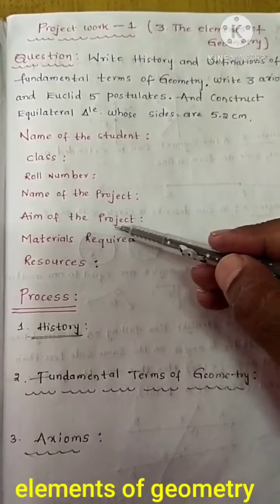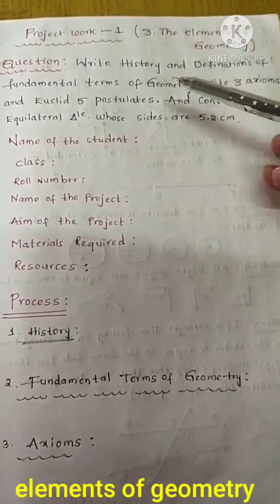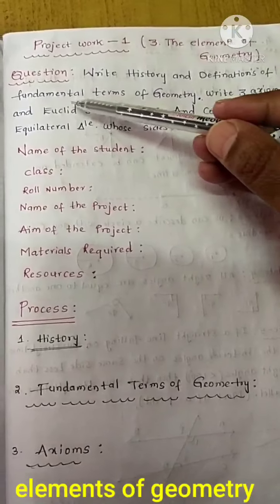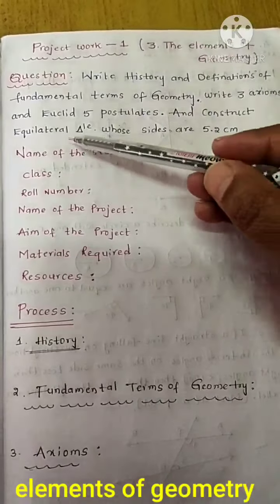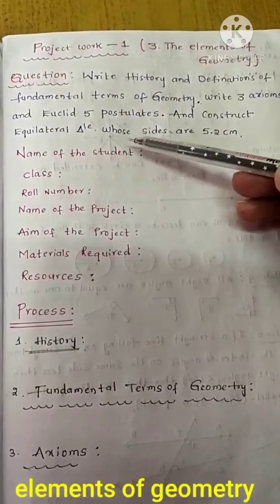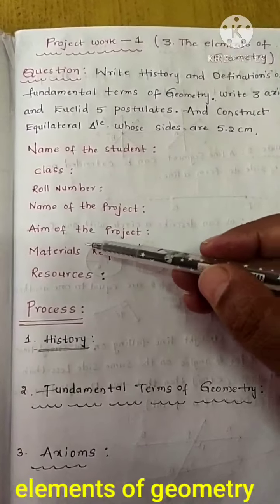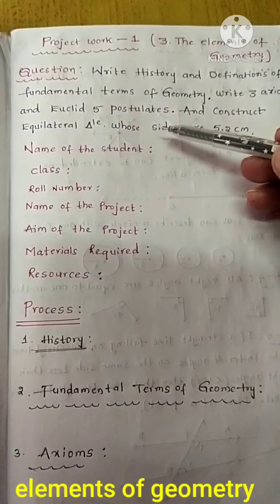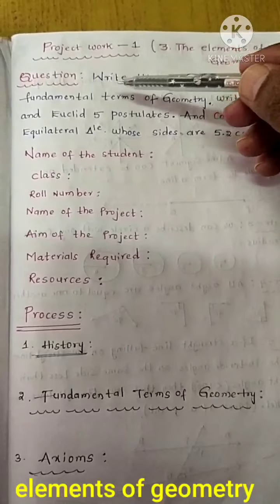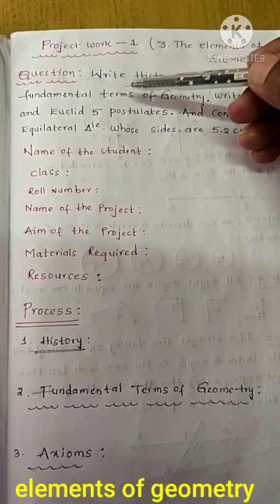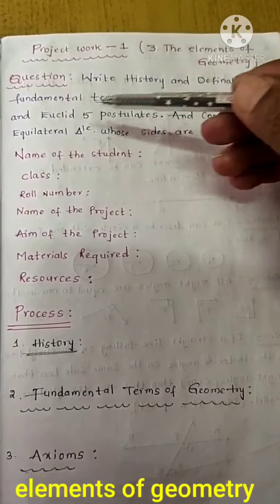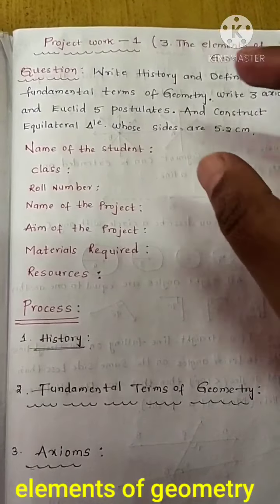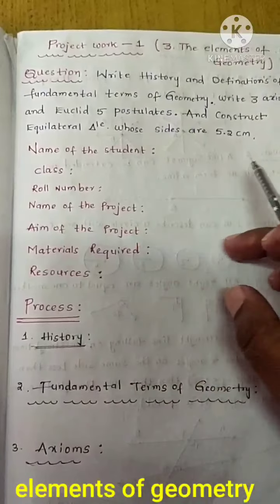The aim of the project: we are writing Euclid's 5 postulates, fundamental terms of geometry, and constructing an equilateral triangle using Euclid's construction. The aim is to know about the fundamental terms of geometry and 3 axioms or Euclid's 5 postulates. Write whichever you feel is better as the aim of the project.